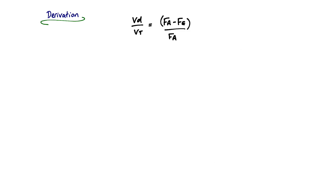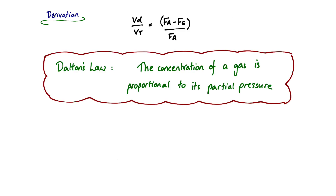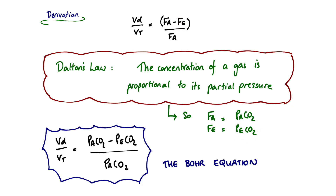Once we reach this stage, we invoke Dalton's Law, which states that the concentration of a gas is proportional to its partial pressure. This means that instead of expressing a fraction of CO2 within a gas, we can talk about the partial pressure of CO2 within that gas. So the FA term becomes the partial pressure of CO2 within the alveolar gas, and the FE term becomes the partial pressure of CO2 within the expired gases. We can therefore rewrite the equation in this form, and this is the Bohr equation.